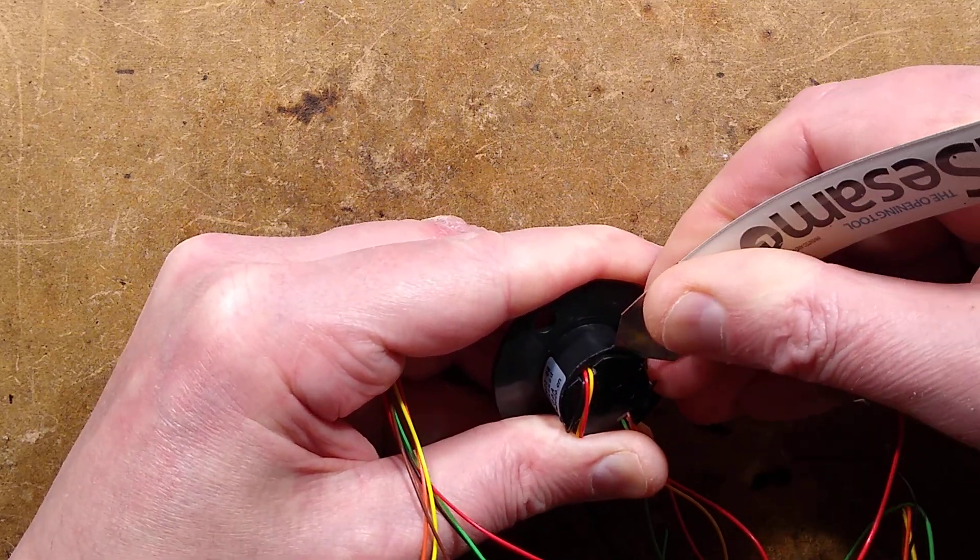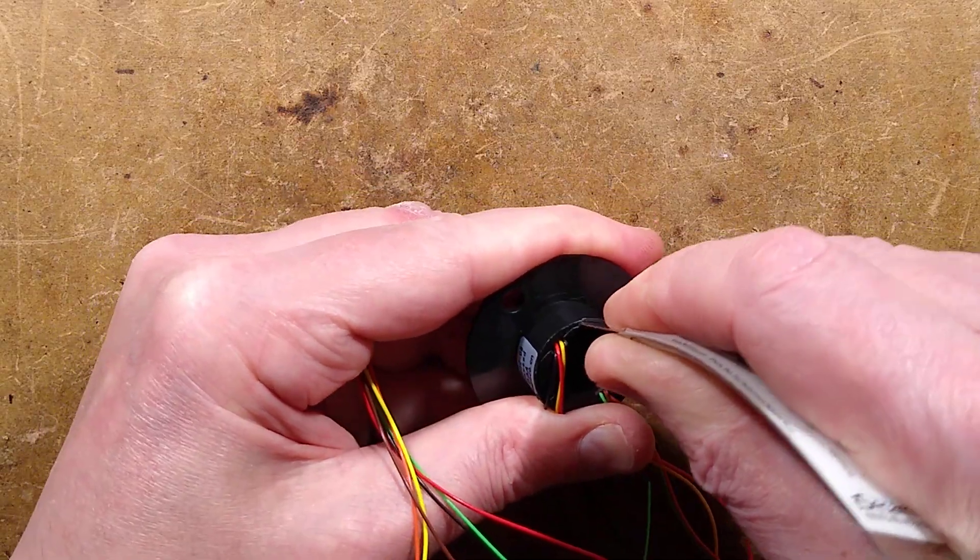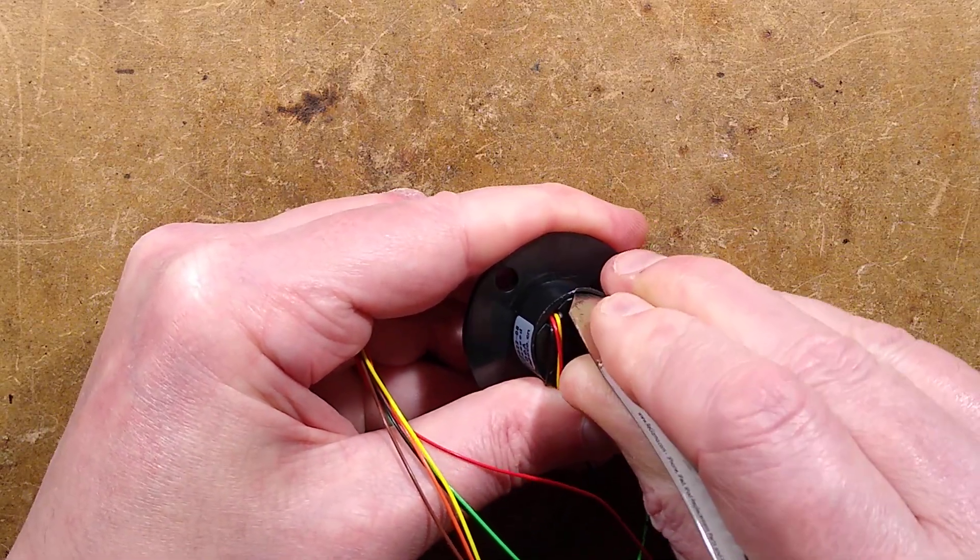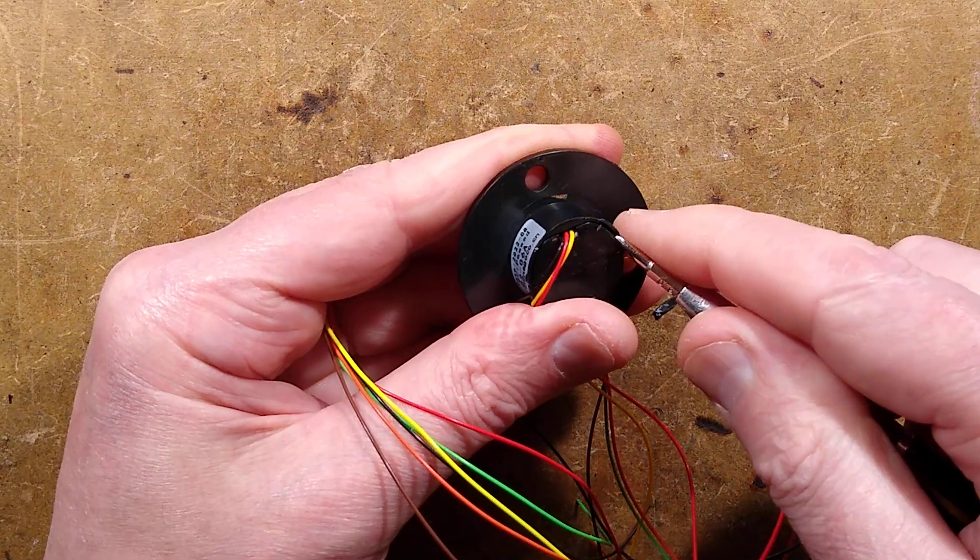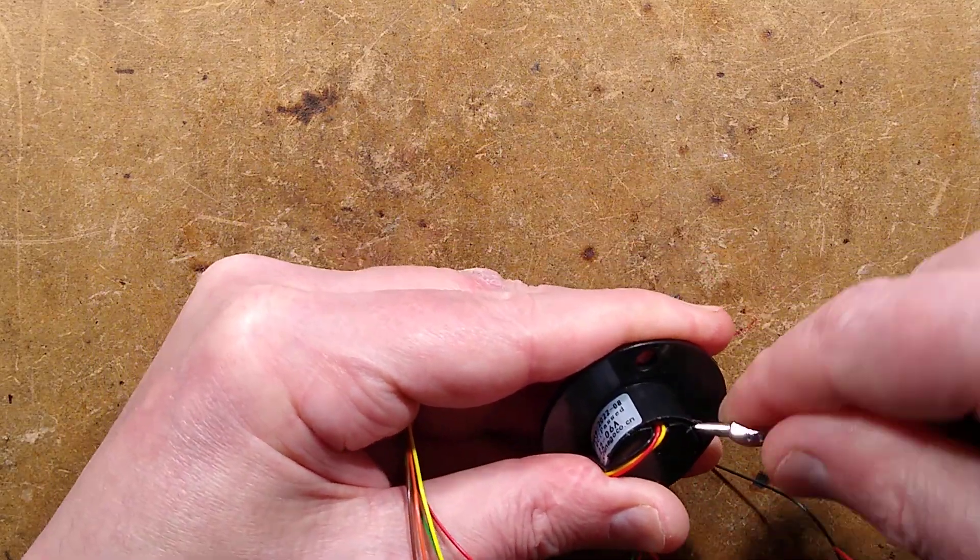In the past, they used to have mercury wetted slip ring contacts, where you could actually get such good connection that you could put data through it. They kind of got banned because, well, you know, mercury, it's a terrible thing.